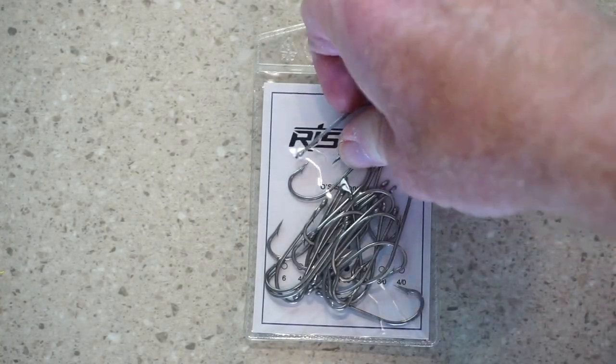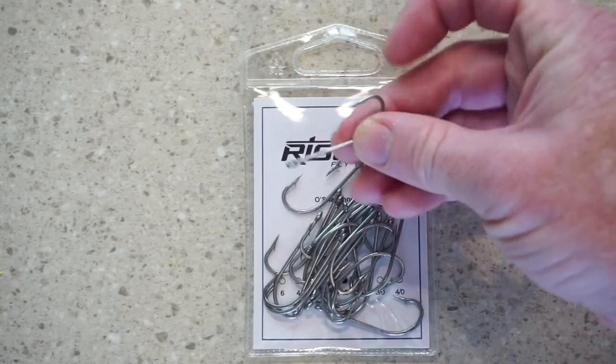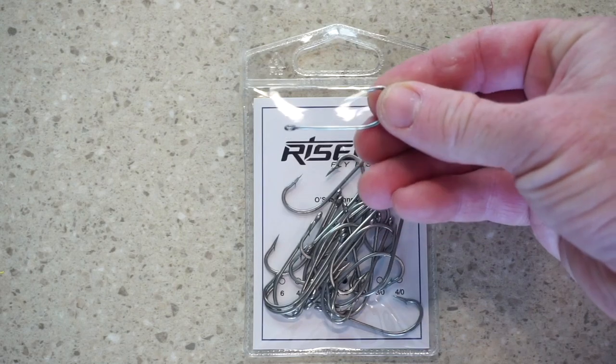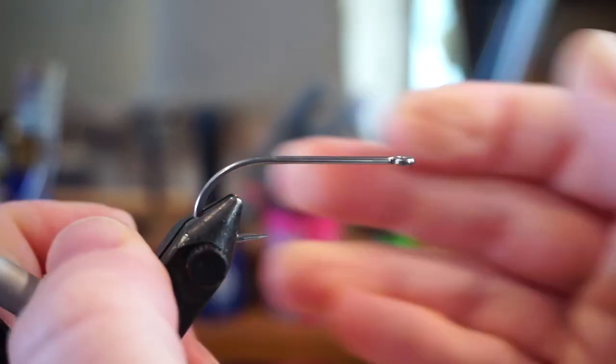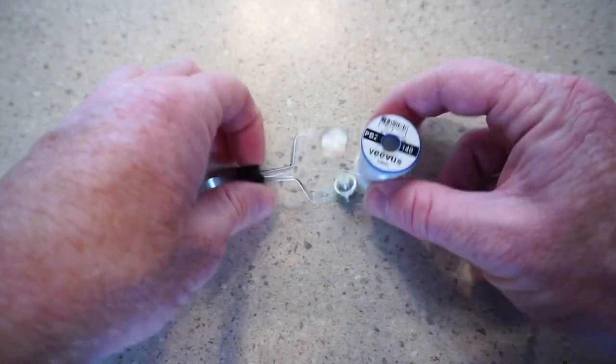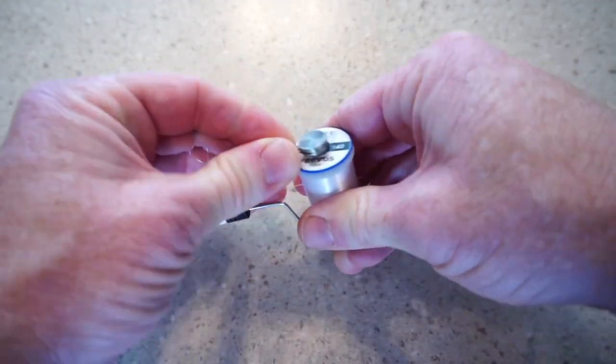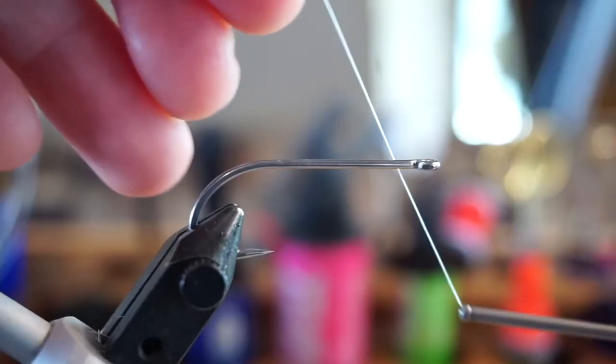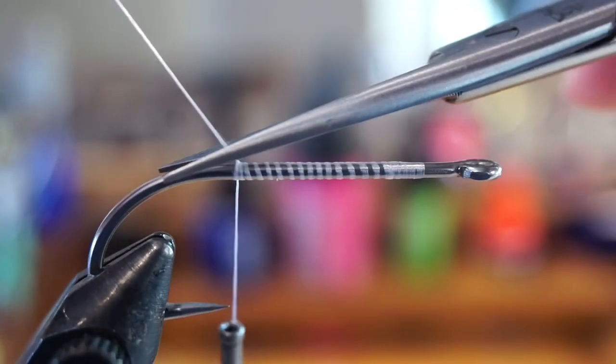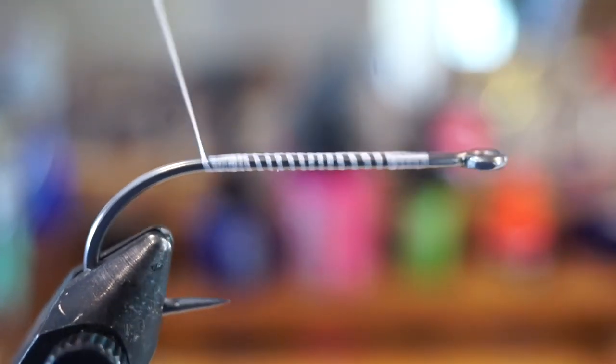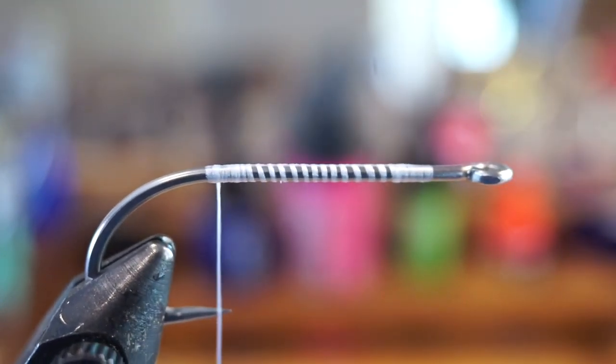I like these Risen Oshagnese hooks, hopefully I said that right for this fly. This is a 1-0. Place your hook securely in your vise. And for thread, I really like this Vivas 140 power thread. Start your thread leaving a small space behind the eye of the hook, and bring your thread back to the bend of the hook before trimming off the tag end. Your thread should end up right about at the hook point.